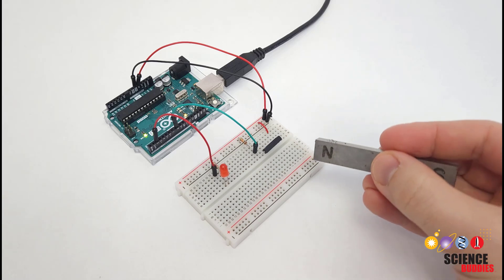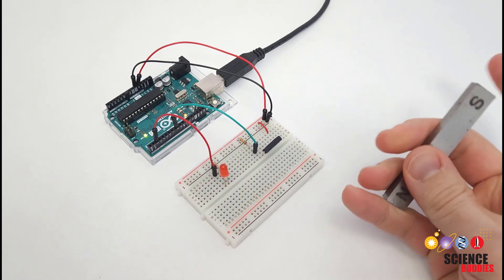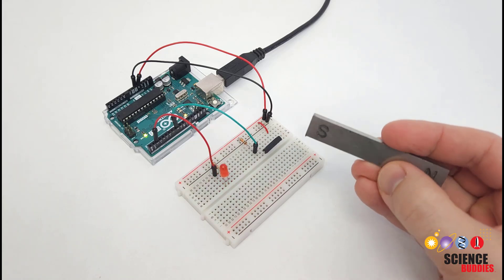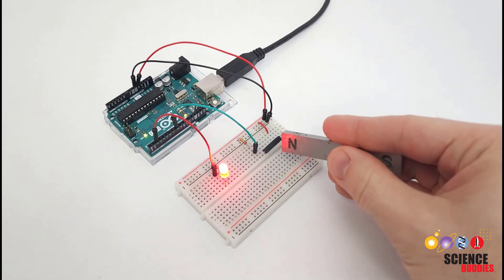One of the nice things about a reed switch, as you can see here, is that it works independently of the magnet's orientation and it does not require contact, which allows you to add a variety of non-contact sensing options to your Arduino projects.